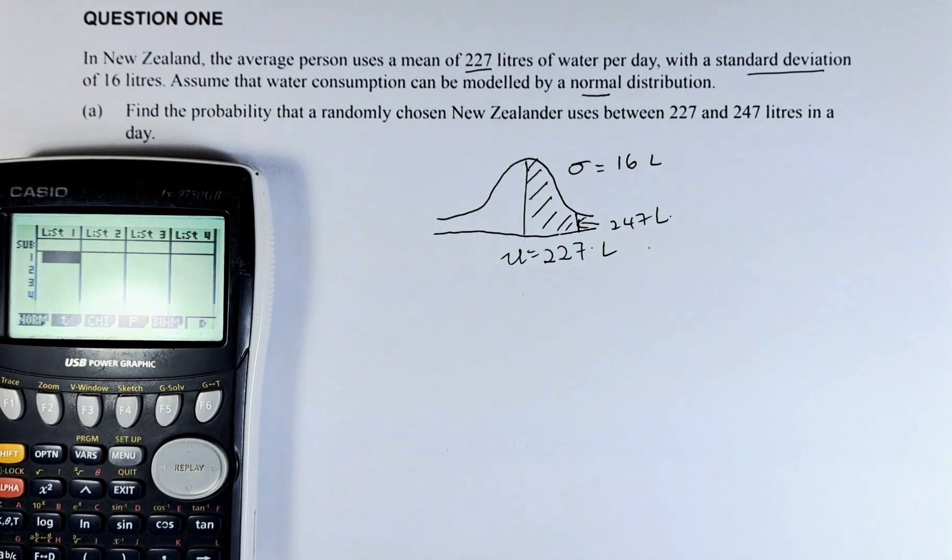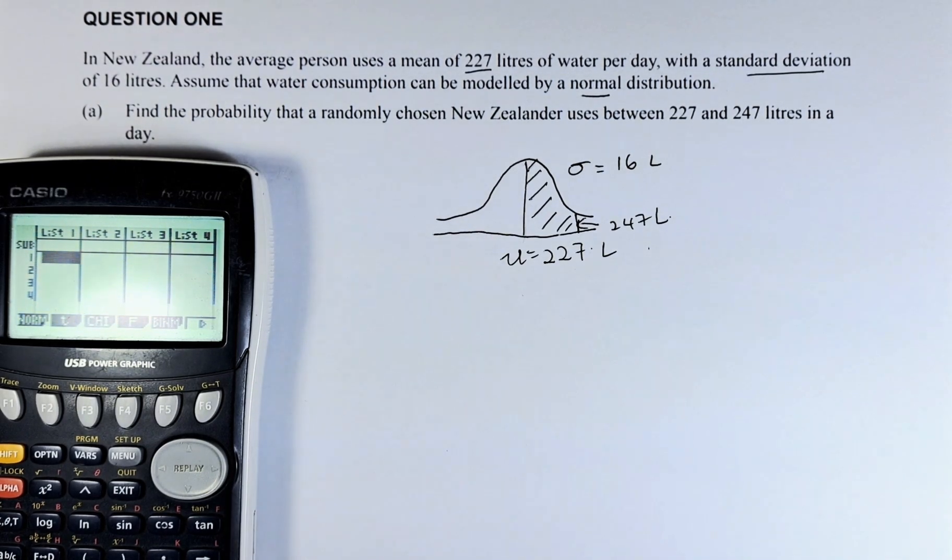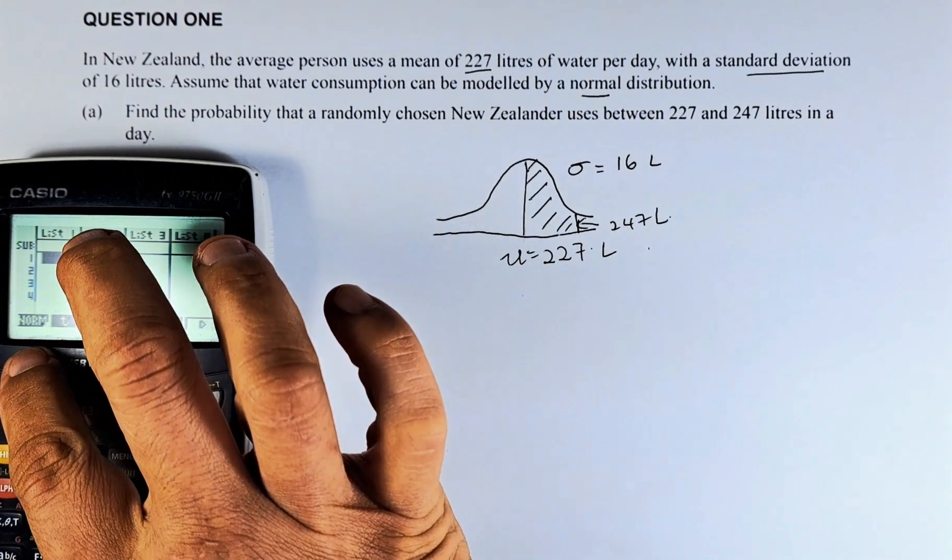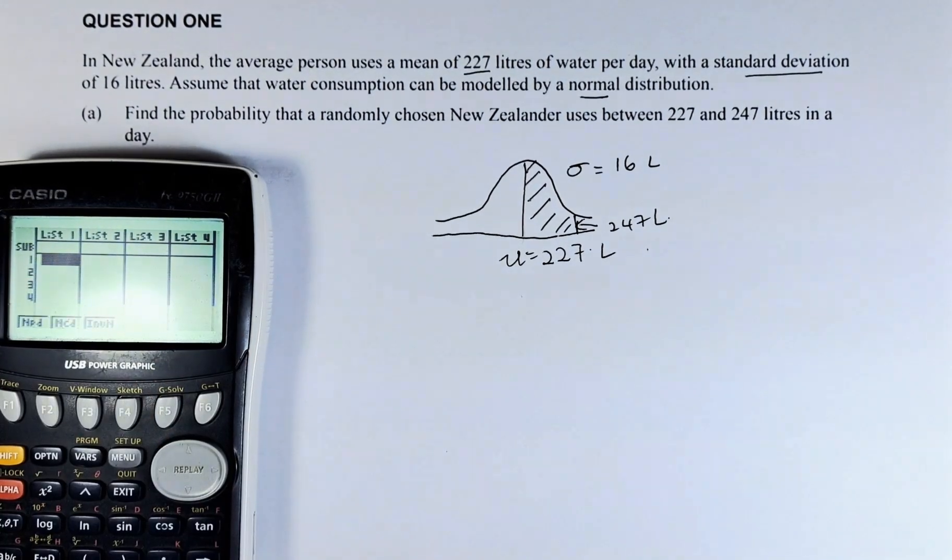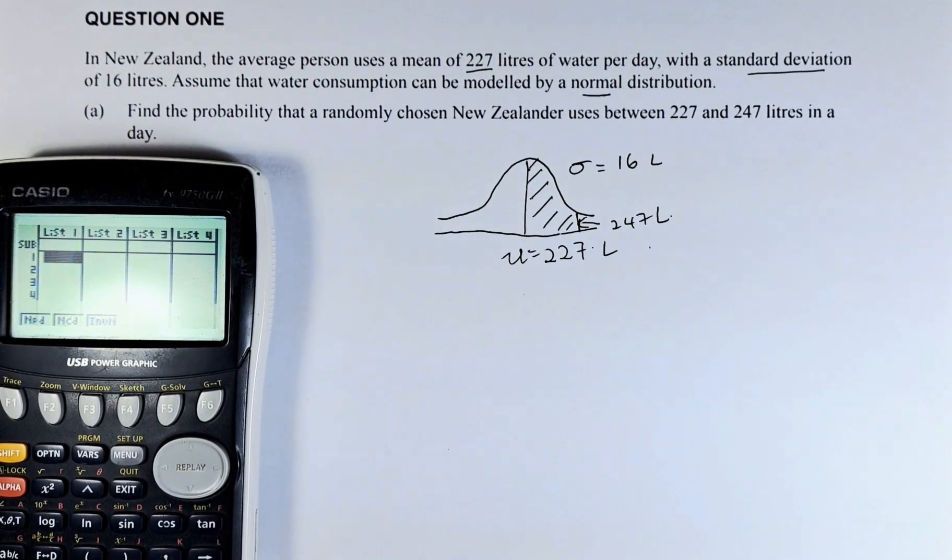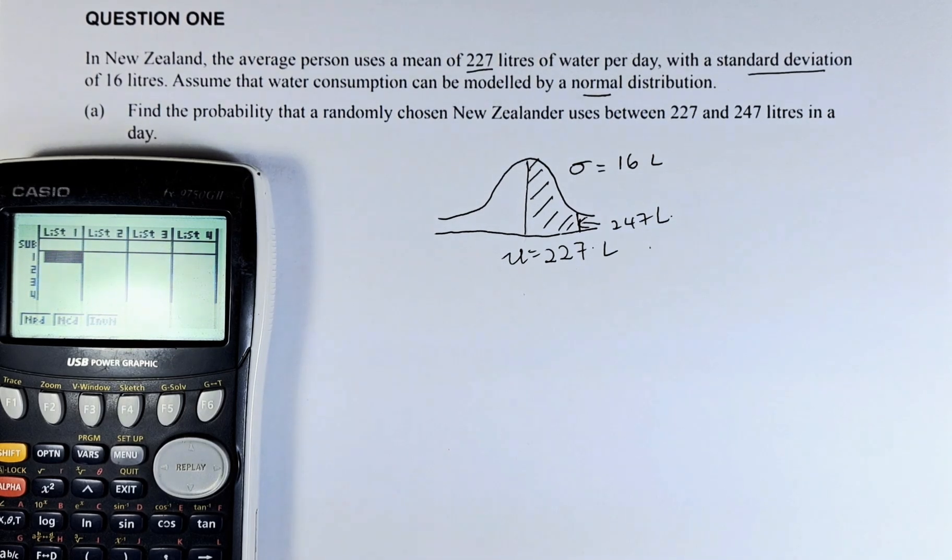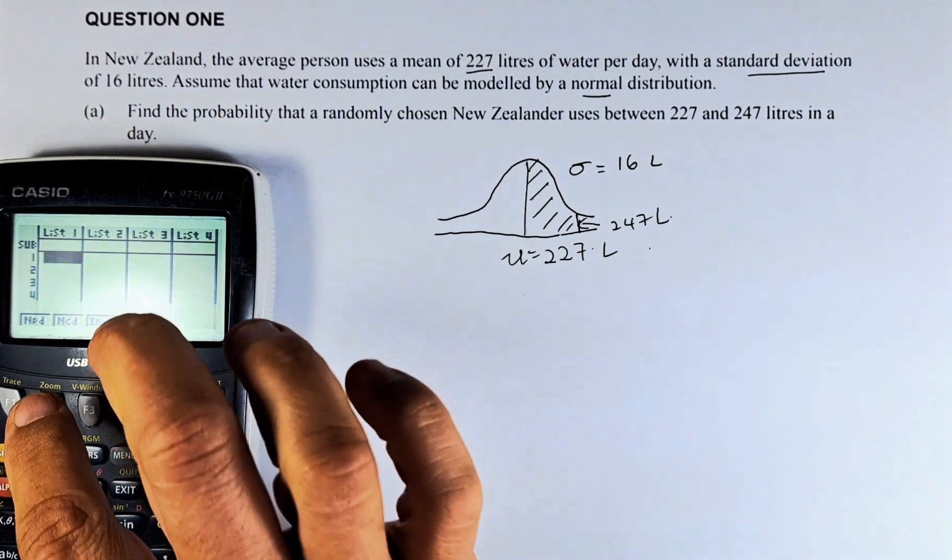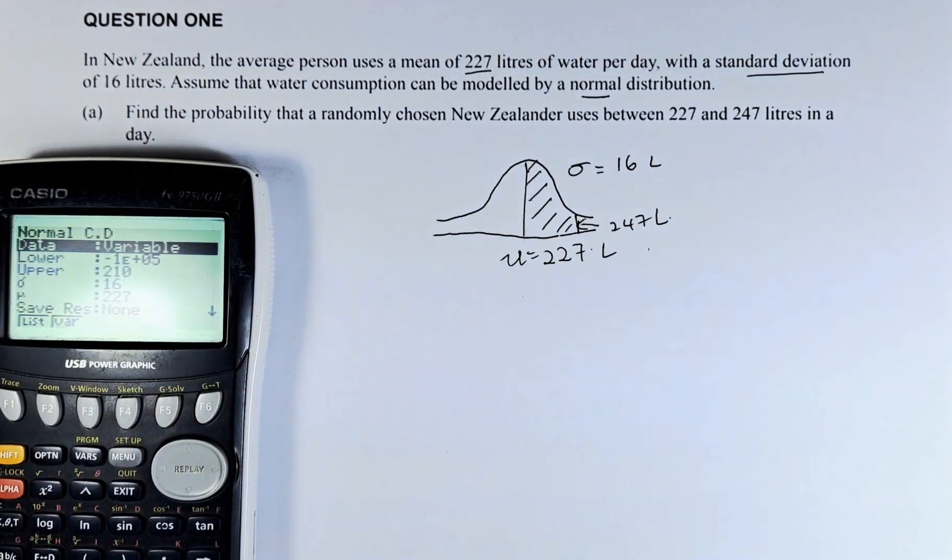And then to get, there are different distributions: binomial, chi-squared, t-test, F and others. So because it's normal, we are going to press normal. F1 goes with F1. Because it's a continuous distribution, we don't put NPD, we are going to put NCD. Next, we are going to press F2, which is NCD.